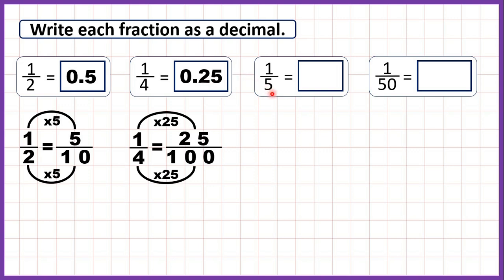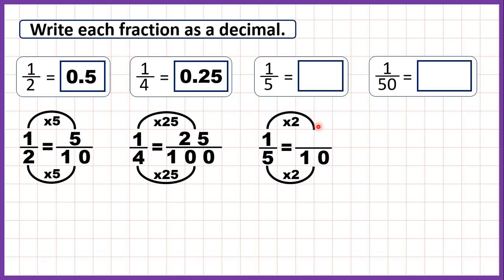Now we have one fifth. We can change that into tenths. Five times two is ten, so one times two is two. Because one fifth is equivalent to two tenths, we write it as a decimal as 0.2, since the first digit after the decimal point is the tenths digit.